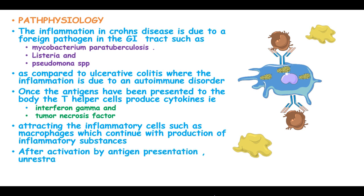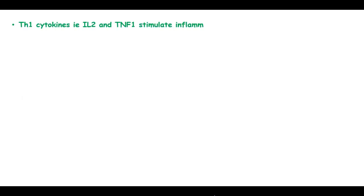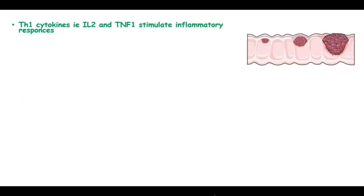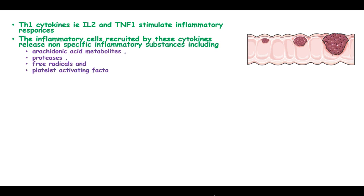After activation by antigen presentation, the responses of type 1 helper cells predominate as a consequence of defective regulation. T helper 1 cytokines, interleukin-2, and tumor necrosis factor stimulate inflammatory responses. The inflammatory cells created by T cytokines release non-specific inflammatory substances including arachidonic acid metabolites, proteases, free radicals, and platelet-activating factor, which result in direct injury to the intestine.